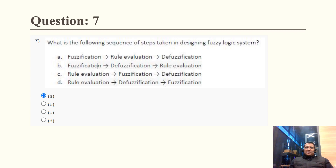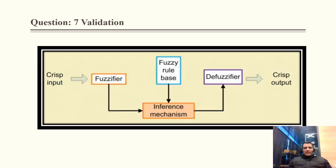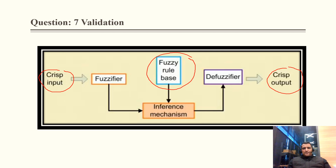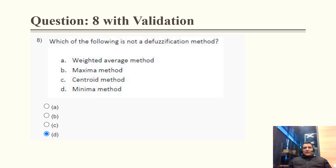Question 7: What is the correct sequence of steps in a fuzzy logic system? We take crisp input, convert it via fuzzification, then perform rule evaluation, and finally defuzzification to get crisp output. The correct sequence is fuzzification → rule evaluation → defuzzification, so option A is correct. Cross-validation confirms: crisp input → fuzzifier → fuzzy input → rule base → defuzzifier → crisp output.